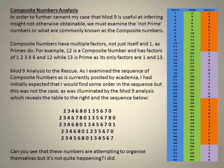In order to further cement my case that mod nine is useful at inferring insight not otherwise obtainable, we must examine the not prime numbers, or what are commonly known as the composite numbers. For example,